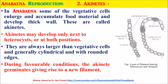The second method is akinetes. In Anabaena, some of the vegetative cells enlarge and accumulate food material and develop thick walls. These are called akinetes — special vegetative cells having food material and also with thick walls. They may develop only next to heterocysts or at both positions, on either side of the heterocysts. They are always larger than the vegetative cells, generally cylindrical with rounded edges.